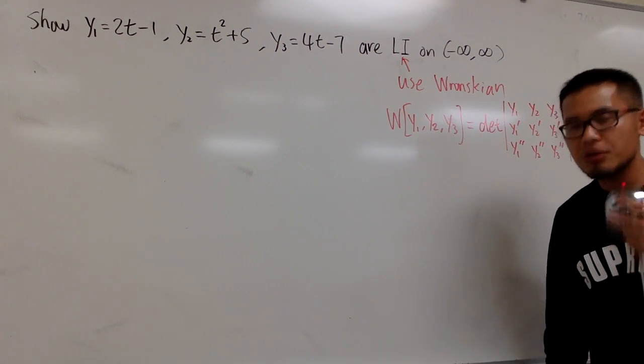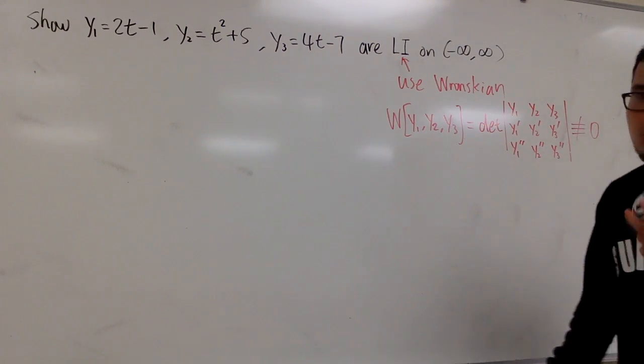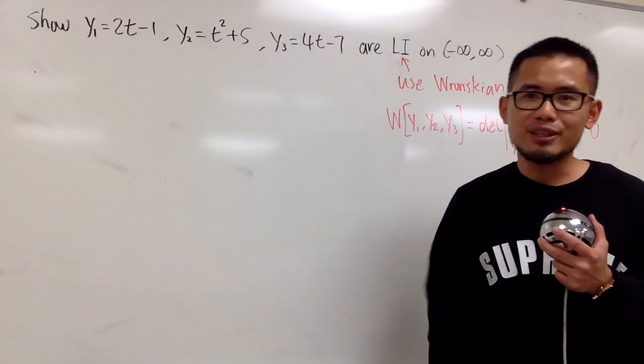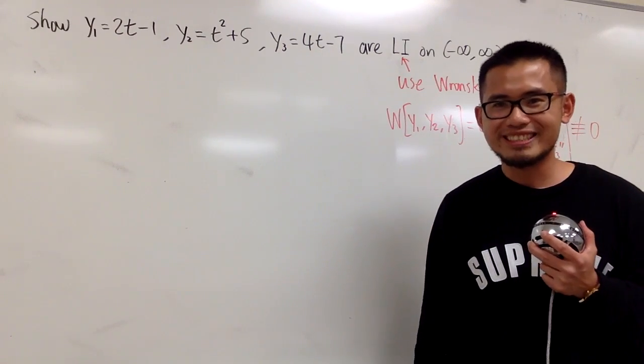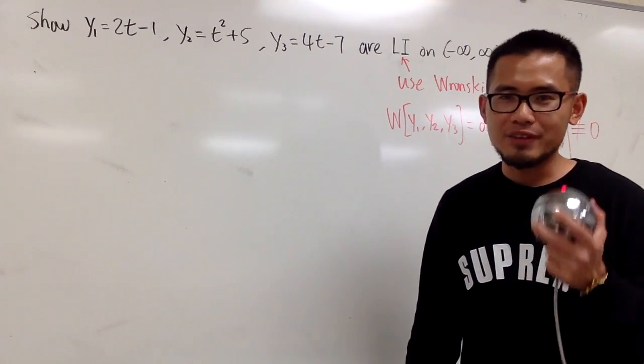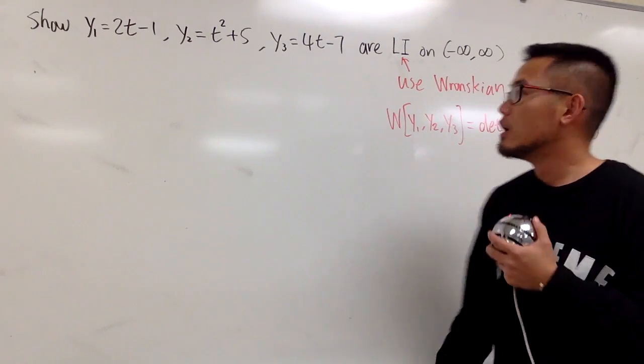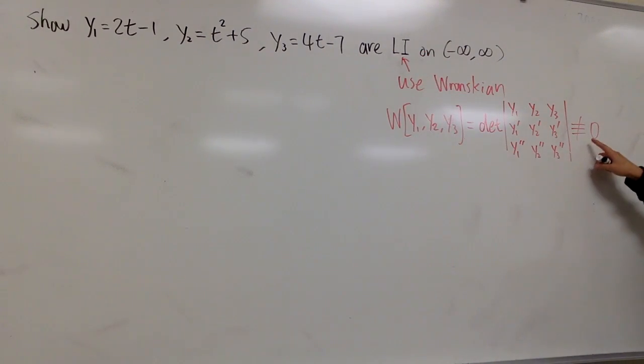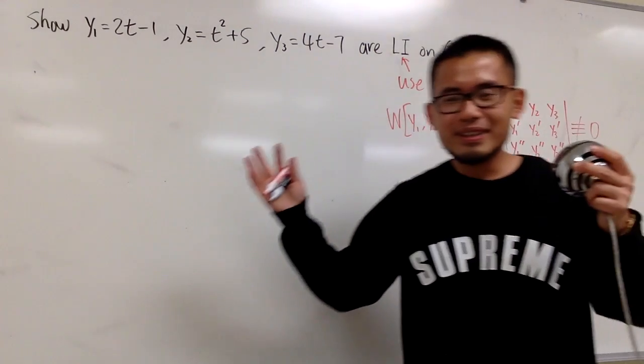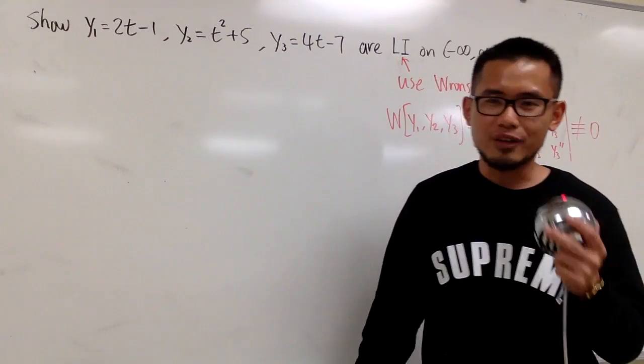However, if you do end up this determinant to be zero, you cannot say the functions are linearly dependent. Most likely they are, but you cannot use that as an argument. If there is a request, I will do that video. But at the moment, this is what you have to remember. To show LI, you can just go ahead and use the Wronskian. Hopefully, this is not identically equal to zero. In that case, you are done. If it's equal to zero, you have to do more work. You have to go back to the definition.